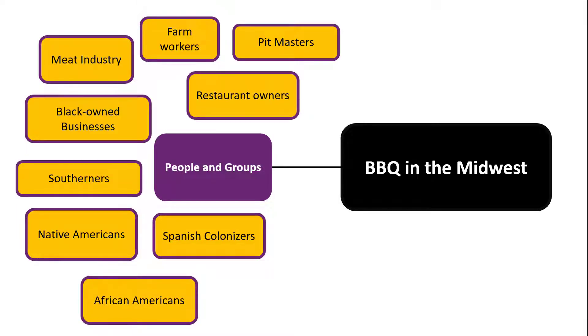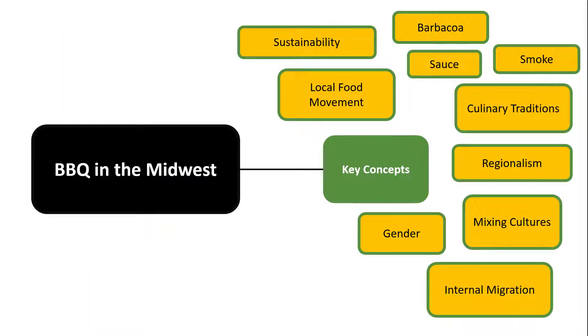Next, I'll group key concepts. These are usually themes or theories discussed in class that apply to your topic. For my topic, I'll group terms like culinary traditions, gender, and sustainability.